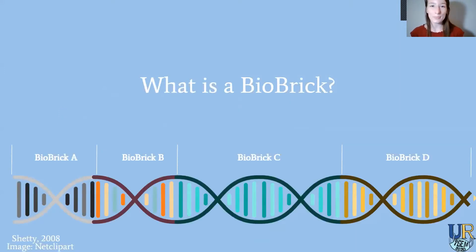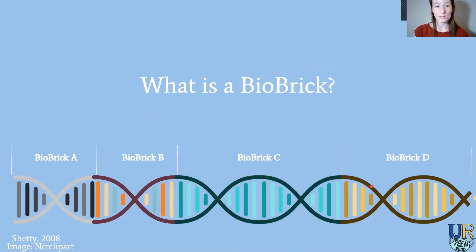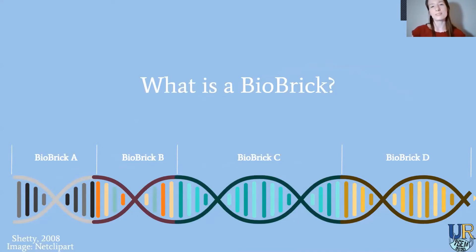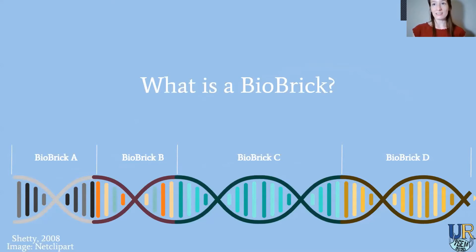So let's jump in. What is a biobrick? A biobrick is a segment of DNA that has a defined biological function. Here we have four biobricks — A, B, C, and D. They're segments of DNA and they all have a defined biological function. There's something special about these segments: they're what we call standardized. This means any two biobricks can be combined and then cut and pasted to a different biobrick to make a whole bunch of combinations.